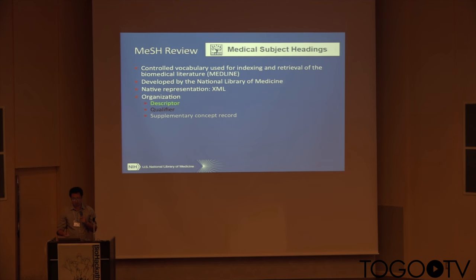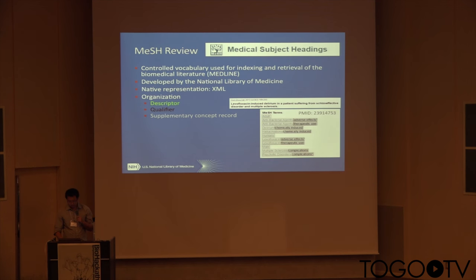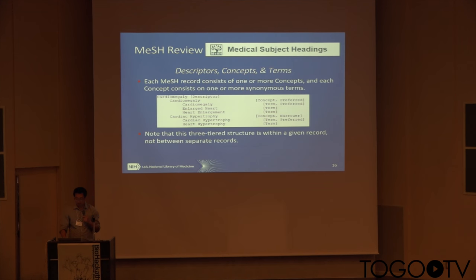MeSH has a three-tier structure. The first tier has three components: descriptor, qualifier, and SCR (supplementary concept record). The descriptor can also be interpreted as the MeSH heading; the qualifier is the subheading. So a descriptor can be a chemical or disease, and a qualifier gives context — for example, a qualifier like 'adverse effect' means this compound's adverse effect is discussed in a PubMed abstract. The second tier is concept, and the third tier is term. One descriptor group can have multiple concepts; one concept group can have multiple terms.